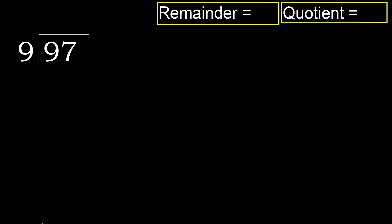97 divided by 9. 9 is not less, therefore start with 9. 9 multiplied by which number is nearest to 9, but not greater?